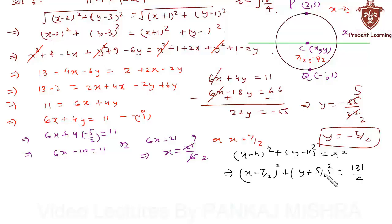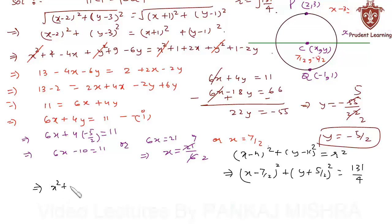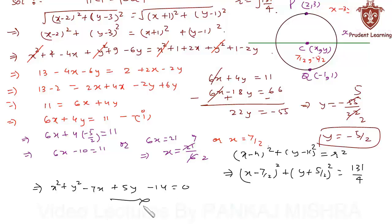This is the equation of the circle in standard form. If you wish to write it in general form, expanding the left-hand side and simplifying gives x² plus y² minus 7x plus 5y minus 14 equals 0. This completes our answer.